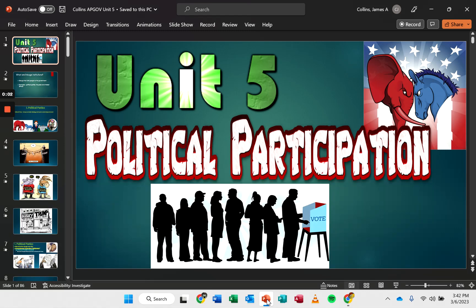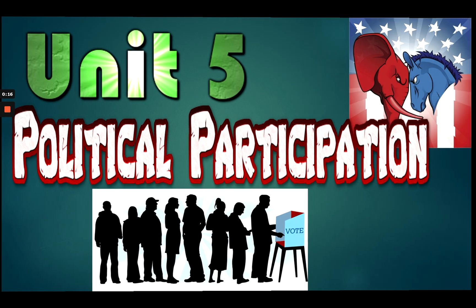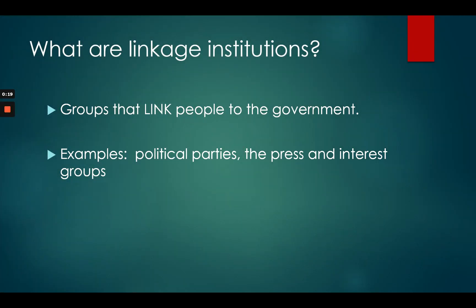Hello, this is AP Government Unit 5 on political participation. This might take two videos, but let's get started. Write this down: what are linkage institutions? Linkage institutions are groups such as political parties, the press, and interest groups. That's what we're going to be talking about in Unit 5 — how do these three examples link the people to the government?